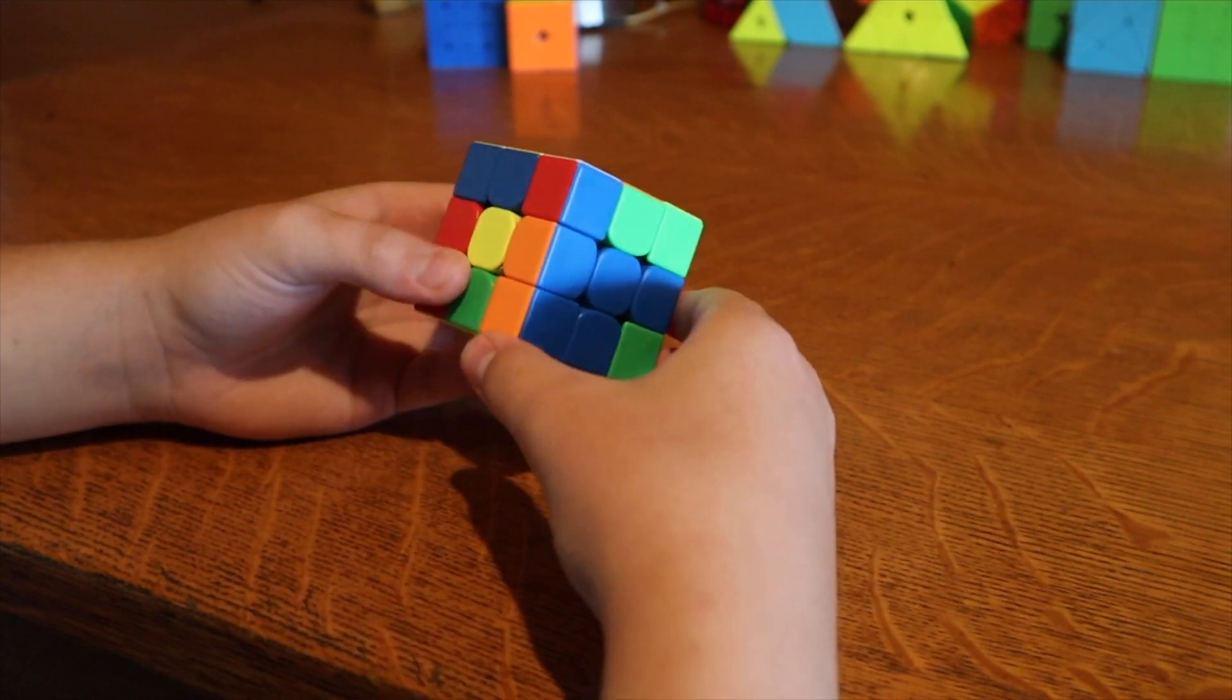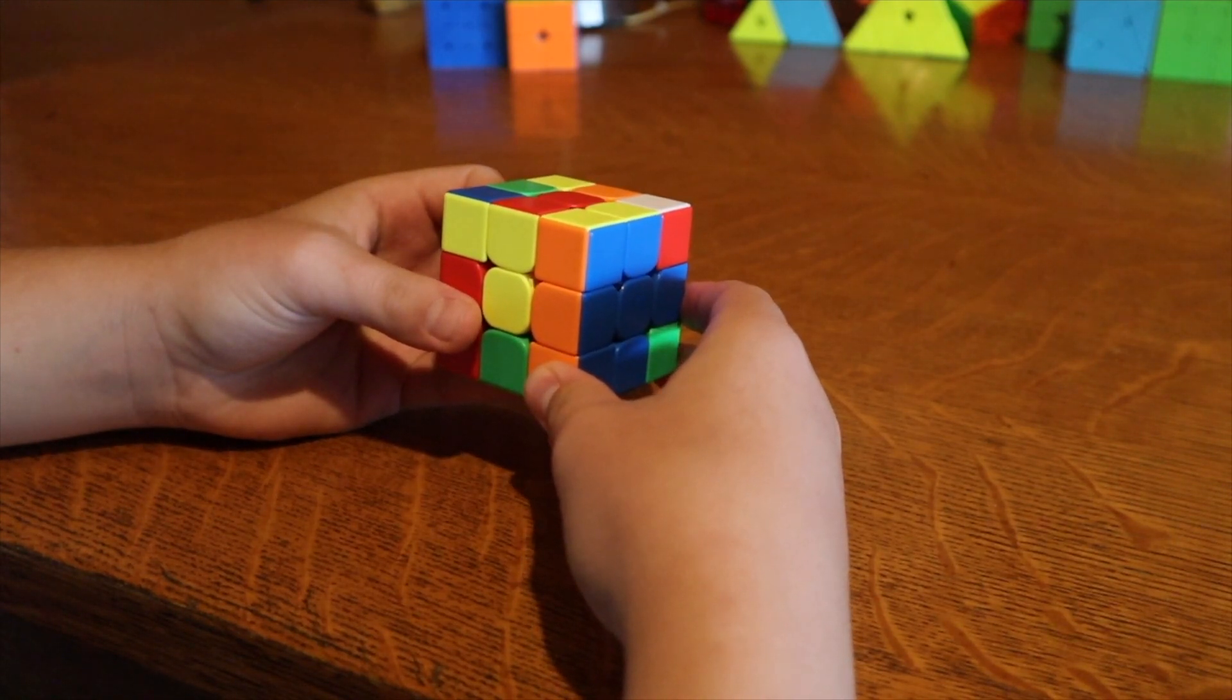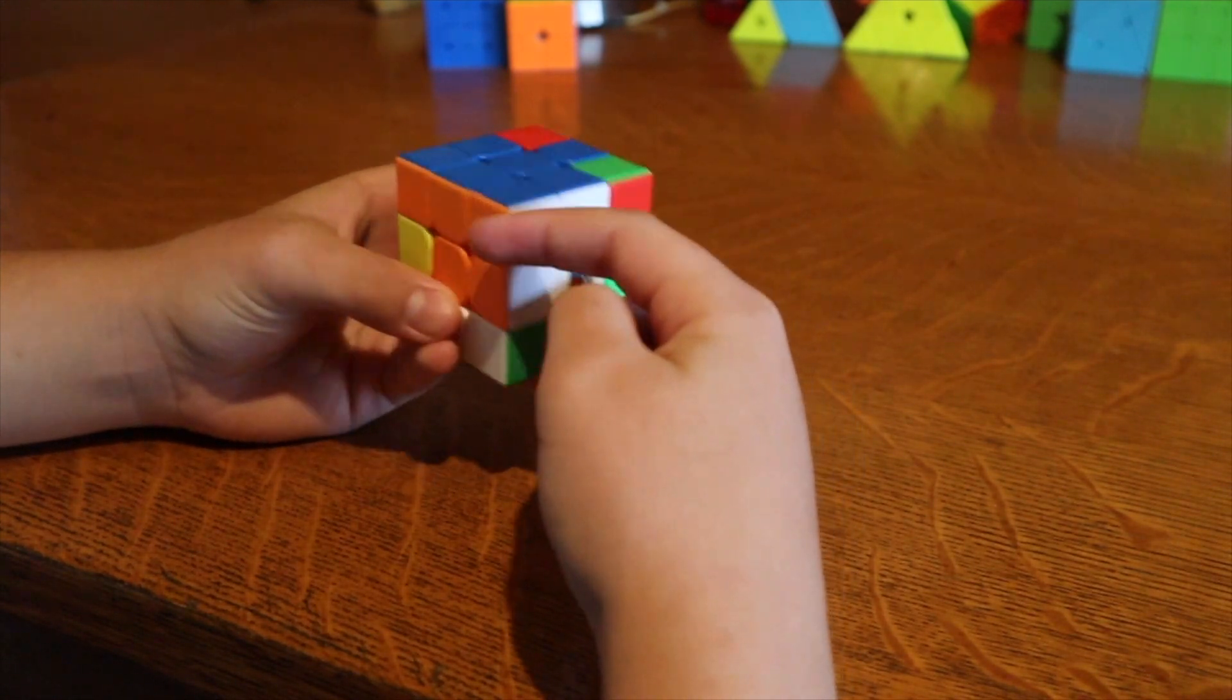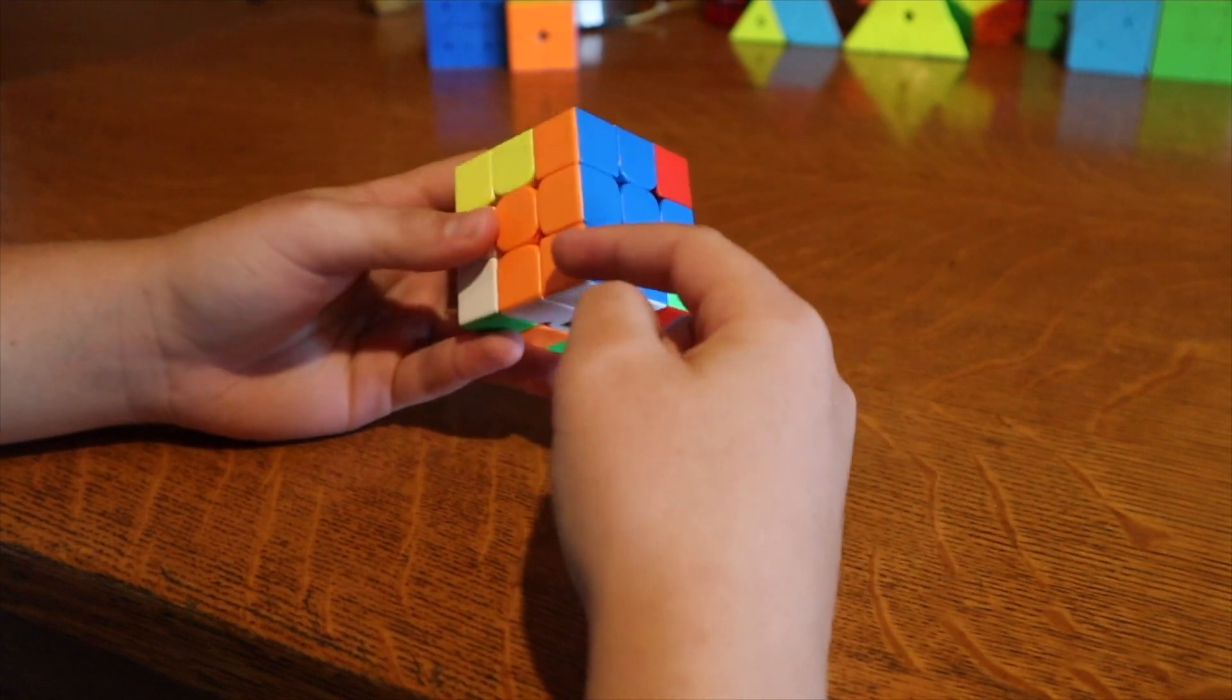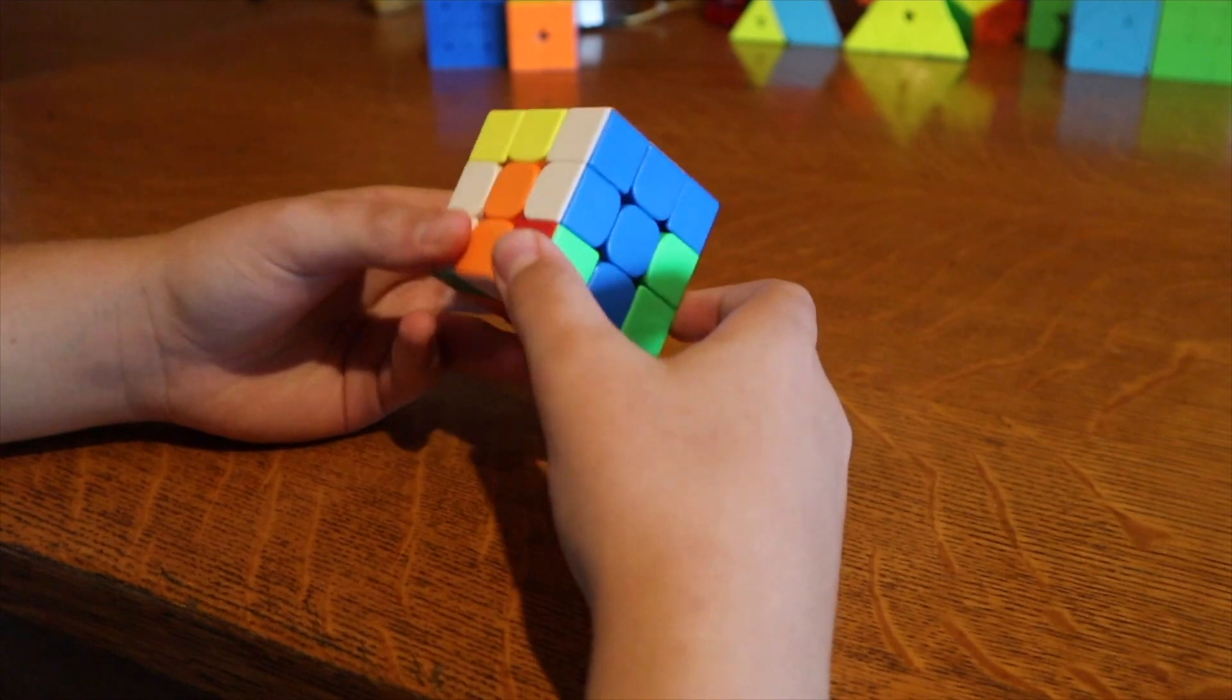So all you have to do is U prime and then R prime to make this absolutely huge block. It's almost a double x-cross except you don't have this orange cross piece in yet.